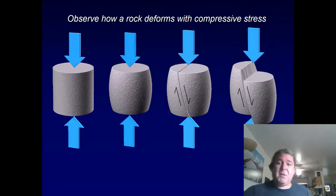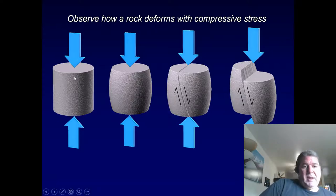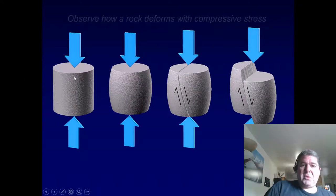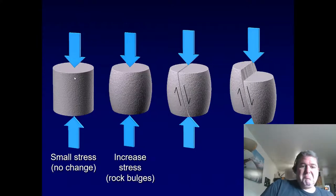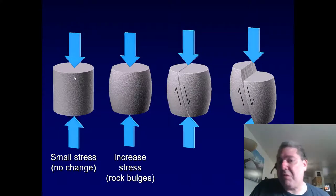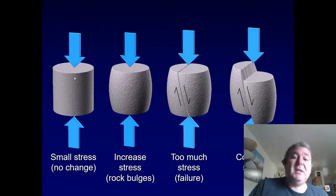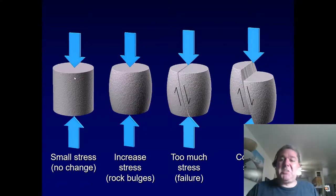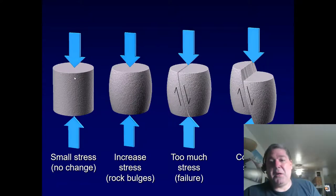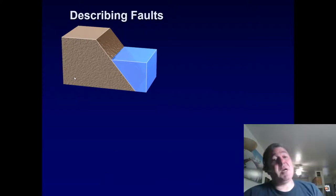Looking at compressional stress: as forces intensify, the rock shows no change, then starts to bulge, then eventually reaches its failure point. Any further compressional stress results in slip on that fault. Multiple sets of faults may develop to accommodate all the stress.